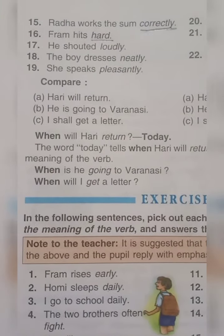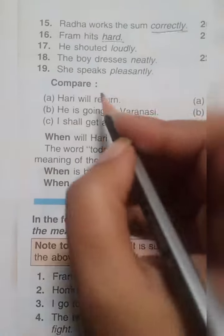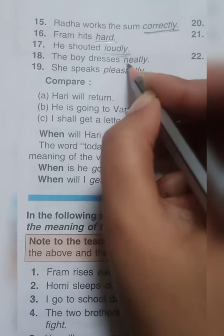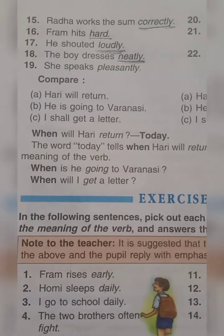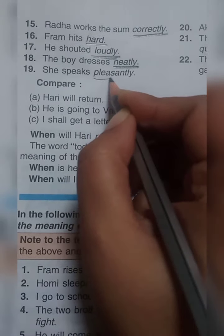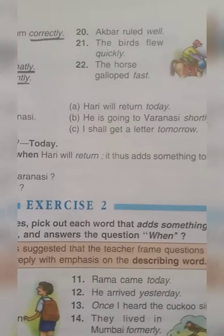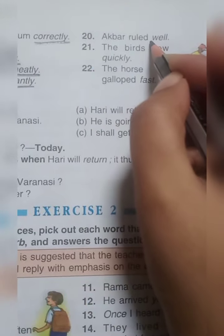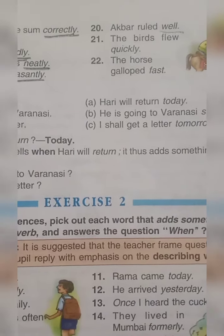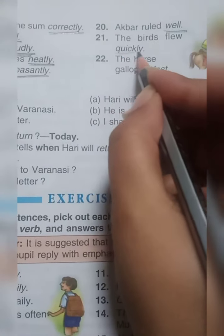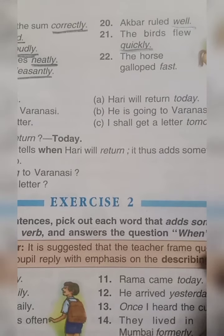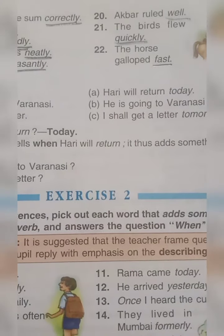Number 17: He shouted loudly. How does he shout? Loudly. Underline 'loudly.' Number 18: The boy dresses neatly. Underline 'neatly.' How does the boy dress? Neatly. Number 19: She speaks pleasantly. How does she speak? Pleasantly. Underline 'pleasantly.' Number 20: Akbar ruled well. Akbar ruled well. Underline 'well.' Number 21: The birds flew quickly. Underline 'quickly.' How did the birds fly? Quickly. Number 22: The horse galloped fast. How does the horse gallop? Fast. Underline the word 'fast.' Check your answers once again.